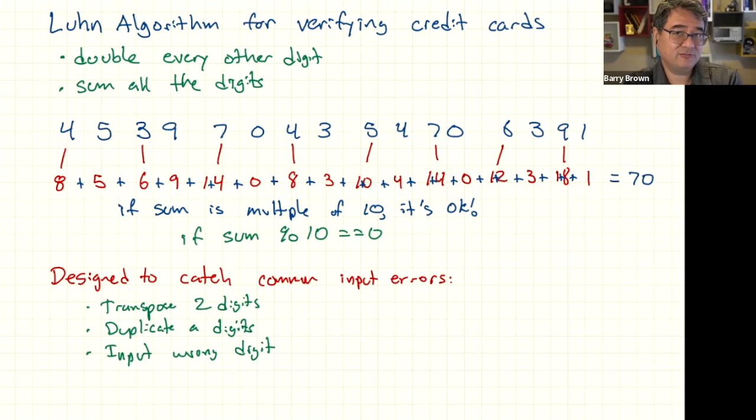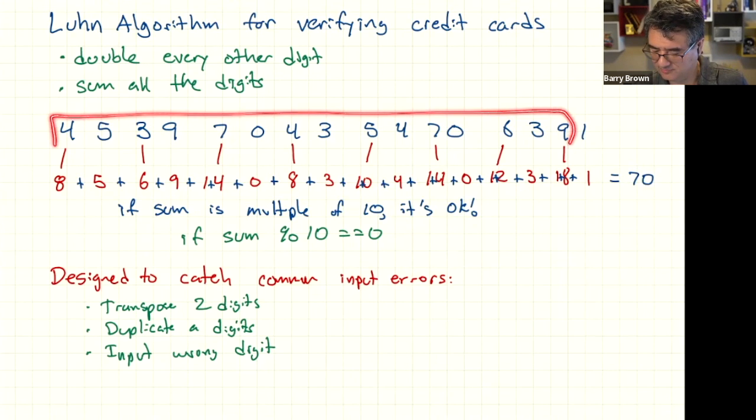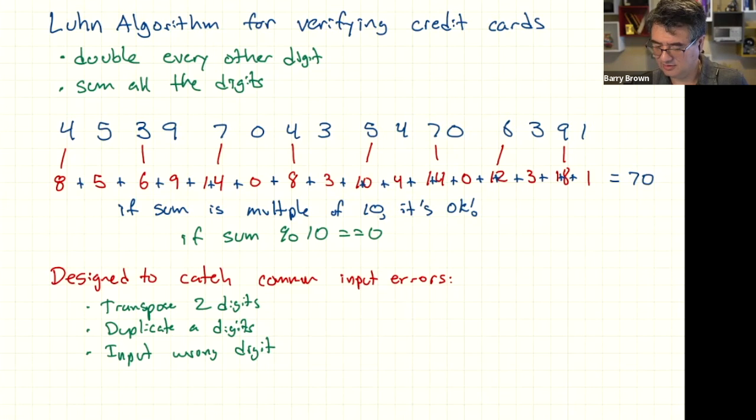So this is not foolproof by any means. It just catches common input errors. Can you think of a way to have this credit card number and the one that I'm showing on the screen is just totally a fake one that I made up. It just happens to work out. So what I did in order to compute this number here was I just generated a whole bunch of random numbers and then I did the calculation and I saw what it added up to.